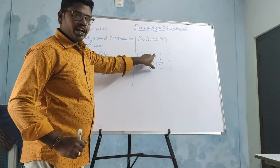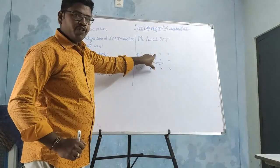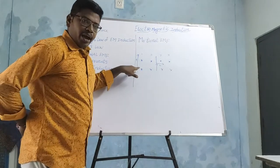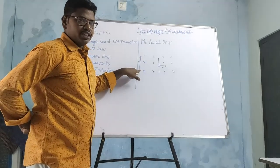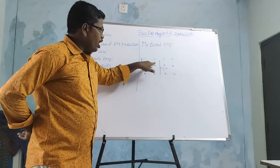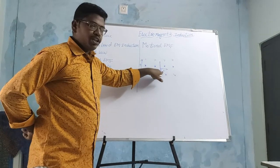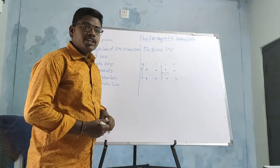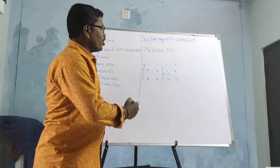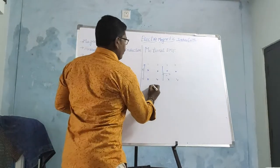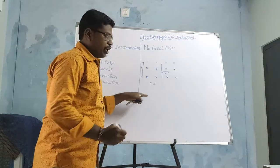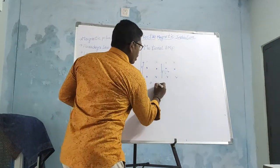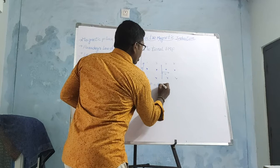Here, if I take a conductor in a magnetic field, it is perpendicular — the length of the conductor is L and it is moving with velocity V. Then the induced EMF across the ends of the conductor is BLV.